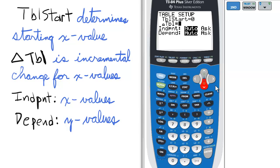Next, the triangle table stands for delta table, meaning the incremental change in x. The default setting is 1, but choose whichever value suits your function.